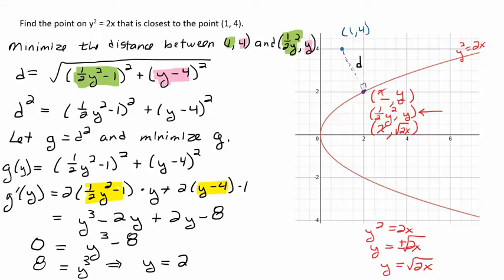So that tells me y equals 2. That's looking pretty good for this point I have up here. Just by kind of estimating, it looked like 2 would be the correct y value. And it is. So if I take 2 to find my x value, now all I'd have to do is take 2 and plug it into my formula. The formula for my parabola is y squared equals 2x. So if y is 2, I get 4 equals 2x. x equals 2. So the point I'm looking for is (2, 2) and that is the point that minimizes the distance.